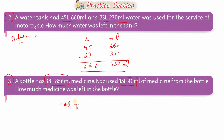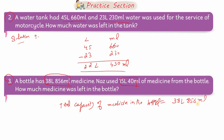Total capacity of medicine in the bottle: 38 liters 856 milliliters۔ اس میں سے Naaz نے use کر لی ہے 15 liters 40 ml۔ Remaining find کرنے کے لیے subtraction apply کرتے ہیں۔